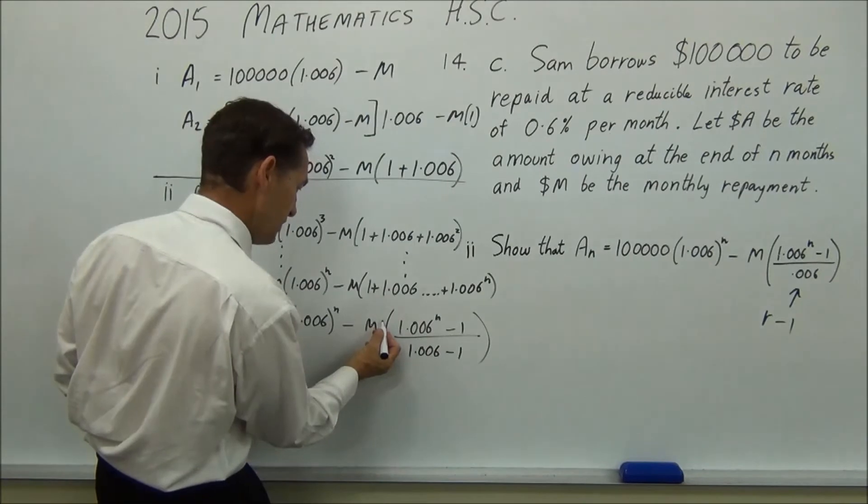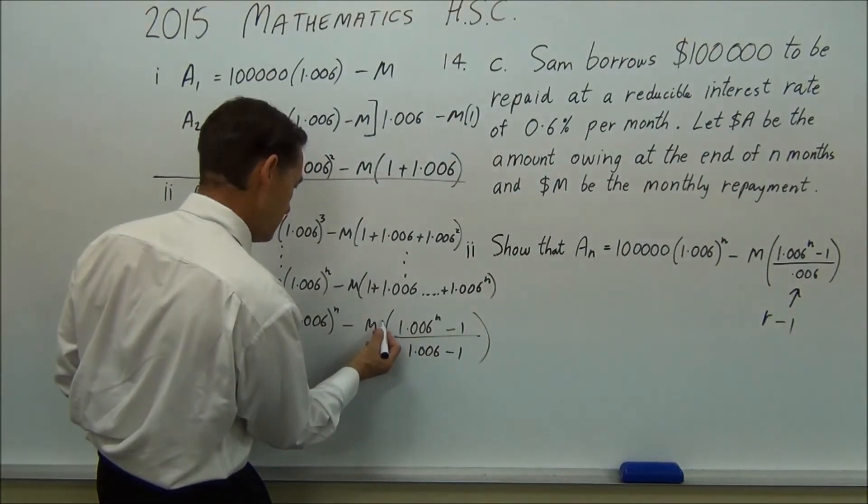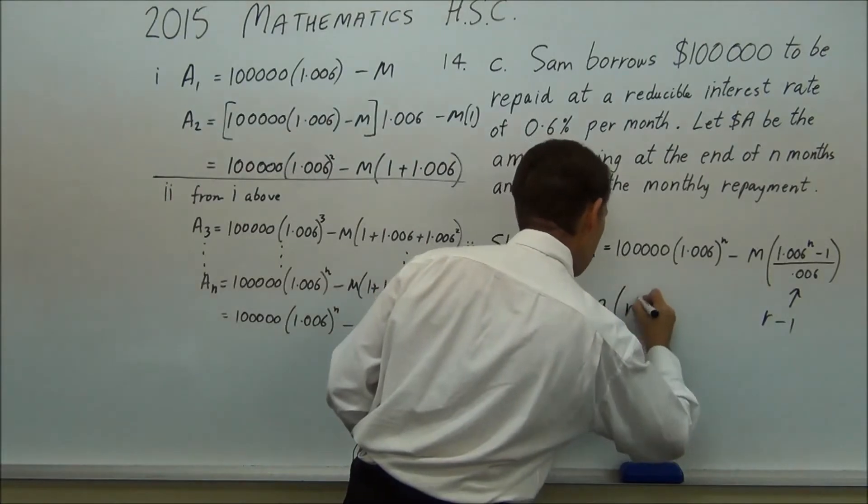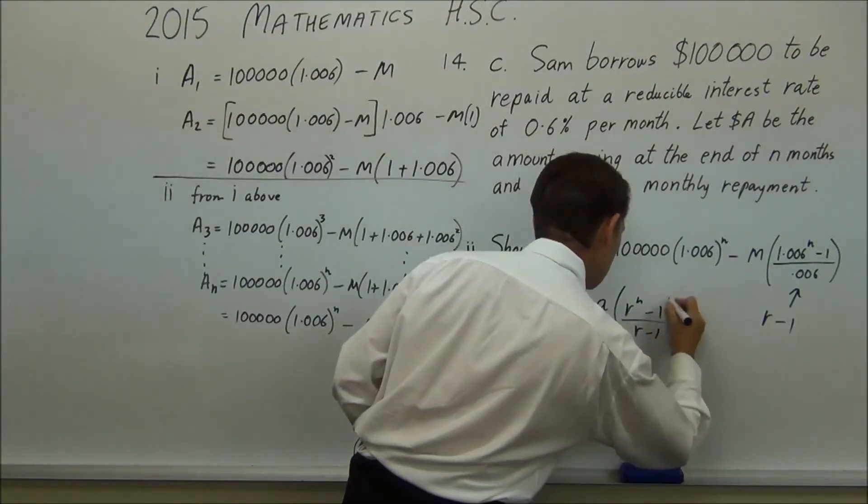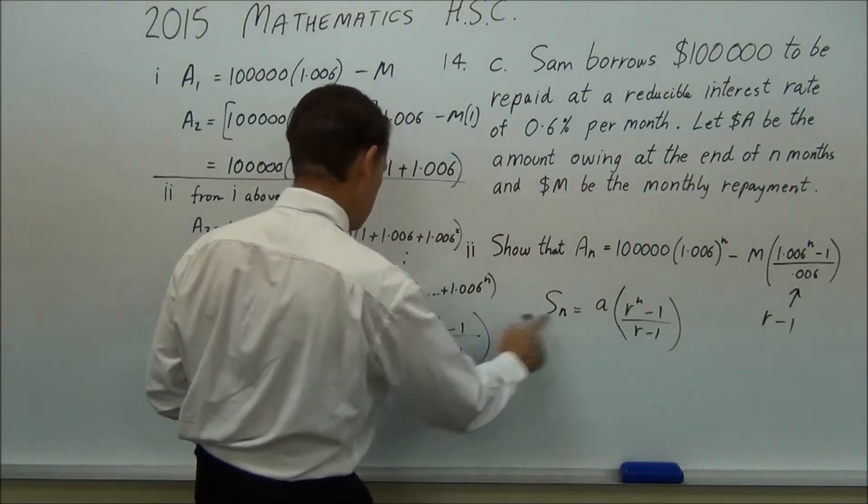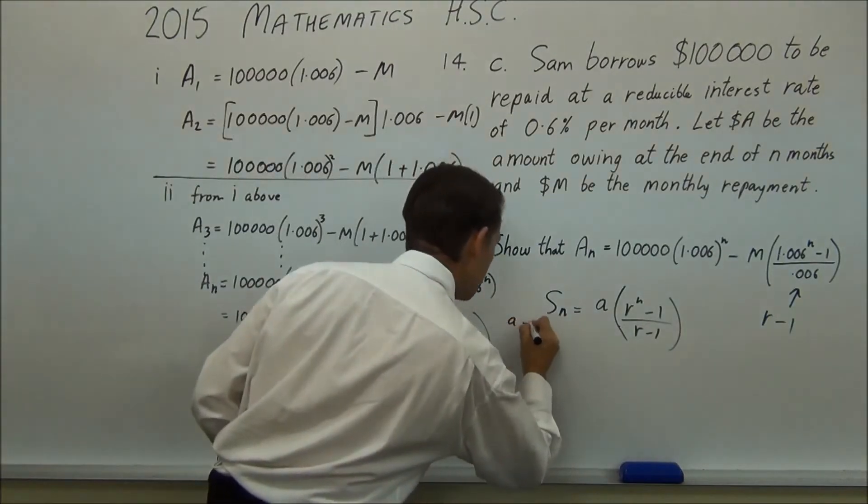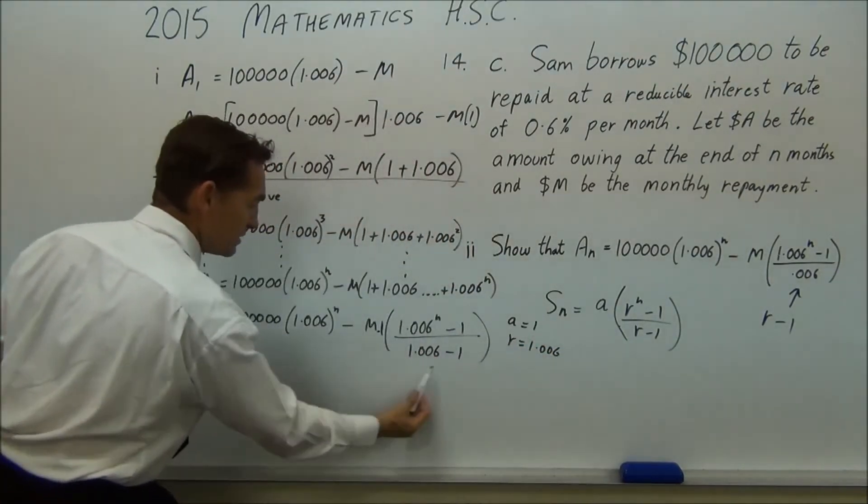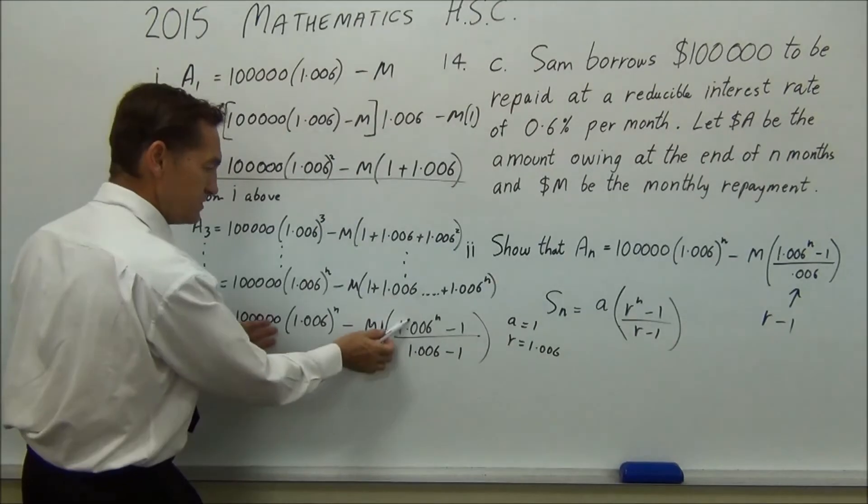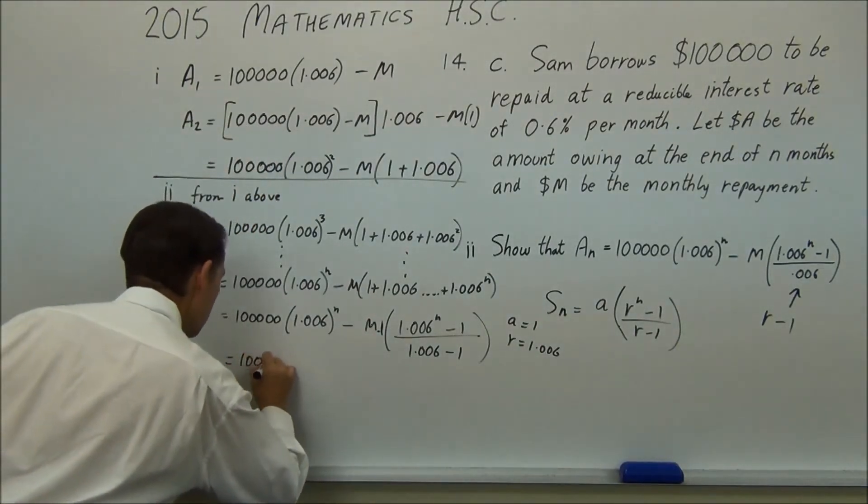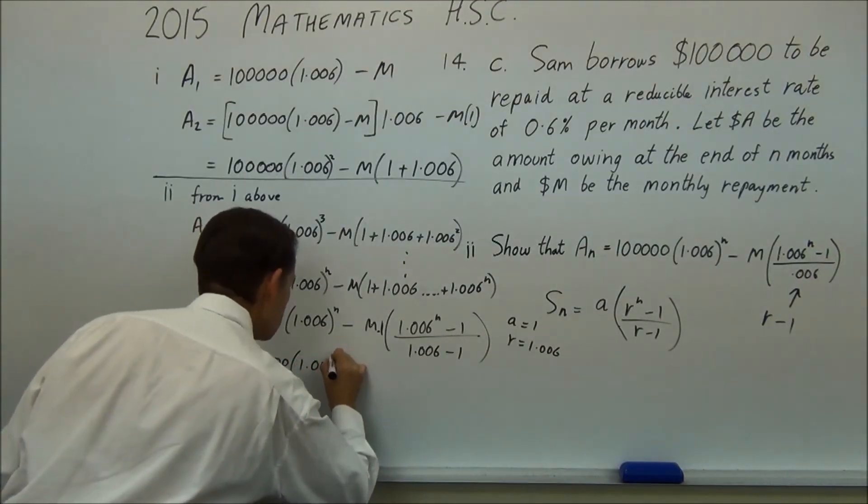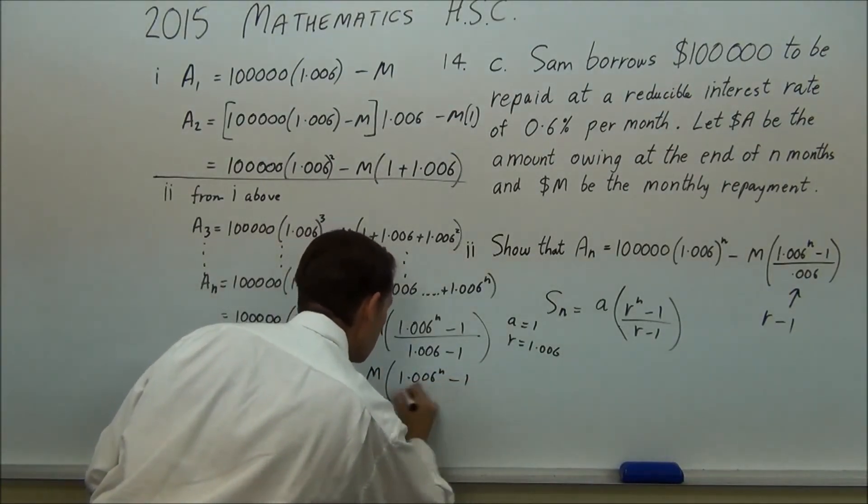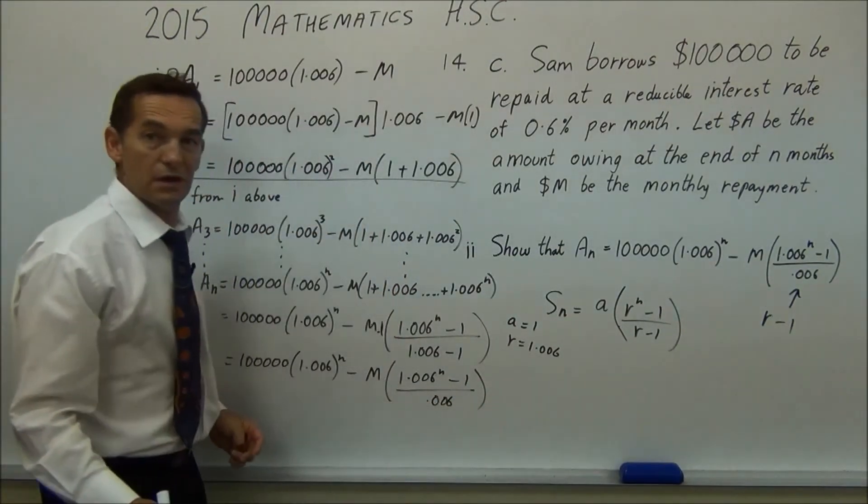So you've got A, you might even have to put a 1 there, would you have to put a 1? Because your sum of an arithmetic series is A, r to the n minus 1, over r minus 1. So I think they want A times A, so maybe you should write A equals 1 and r equals 1.006. So if you put that and that there, you're telling the examiner you know what's going on and then just change that in one more line. So you just write equals 100,000 times 1.006 to the n minus M times 1.006 to the n minus 1 over 0.006. And you're done.